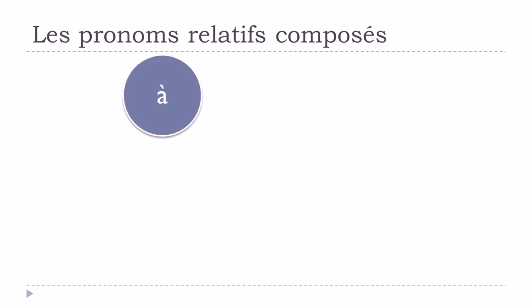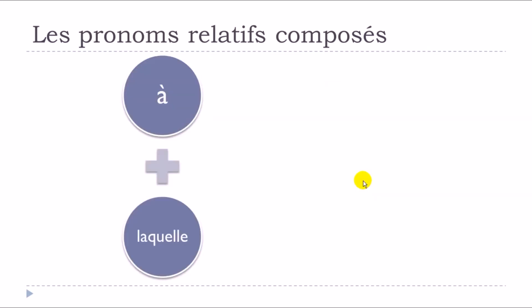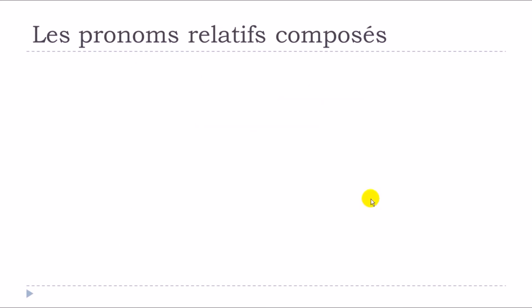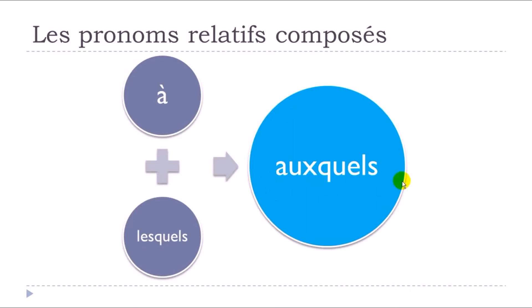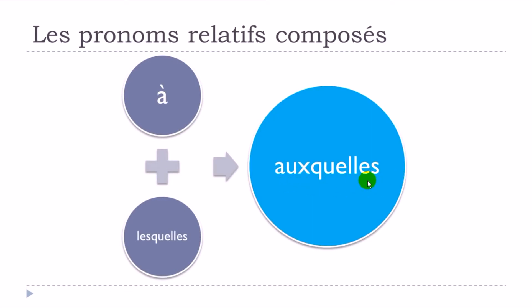If you combine the preposition à and your pronoun lequel, then you will get auquel. If you combine à and the feminine form laquelle, the good news is that it doesn't change — it stays à laquelle. If you combine à and the masculine plural form lesquels, then you will get auxquels. And if you combine à and the feminine plural lesquelles, you will get auxquelles. Phonetically it's the same as the masculine, but you write it differently.